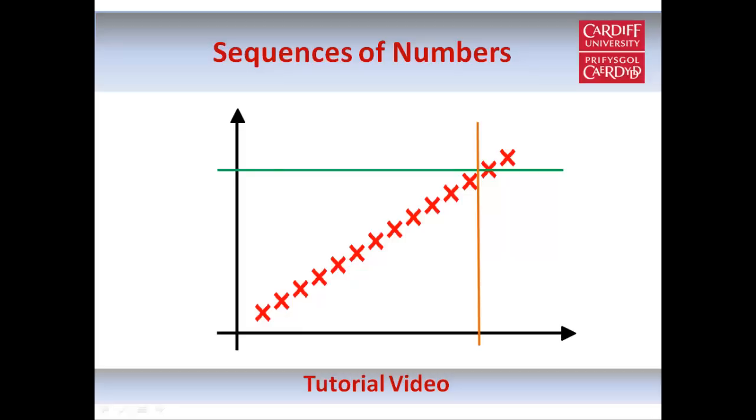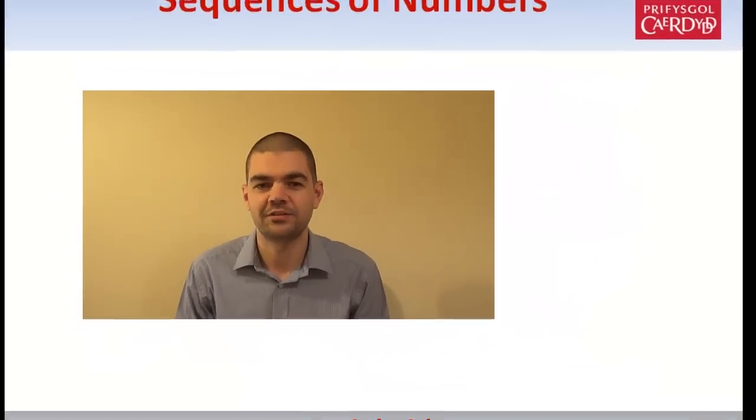Welcome to this tutorial on sequences of numbers. A sequence of numbers is fairly easy to recognise — it's essentially just a list of numbers one after the other, which goes on forever. Sequences can have certain properties. For example, they can be bounded above, bounded below, they can be monotonic or non-monotonic, and they can be convergent or divergent. In this tutorial we're going to explain these concepts using simple explanations and diagrams.